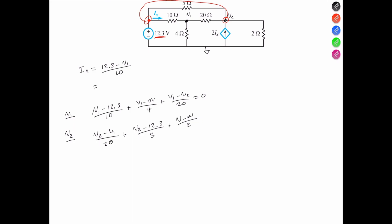And at V2 we have a current entering V2, so that's a negative current, so that would be negative 2 Ix, and that's equal to 0.